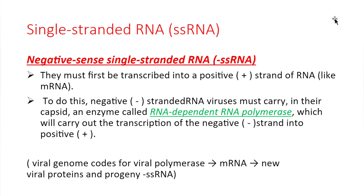Negative sense single-stranded RNA viruses must first be converted to positive sense to function like mRNA. To do this, they must carry their own enzyme — RNA-dependent RNA polymerase — because human cells do not have this enzyme. This enzyme converts the negative sense strand into positive sense, producing mRNA, new viral proteins, and new negative sense single-stranded RNA for the new virus.